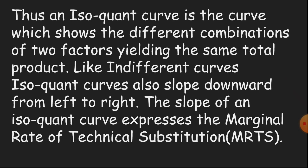An isoquant curve is a curve which shows the different combinations of two factors yielding the same total product. Like indifference curves, isoquant curves are also sloped downward from left to right.